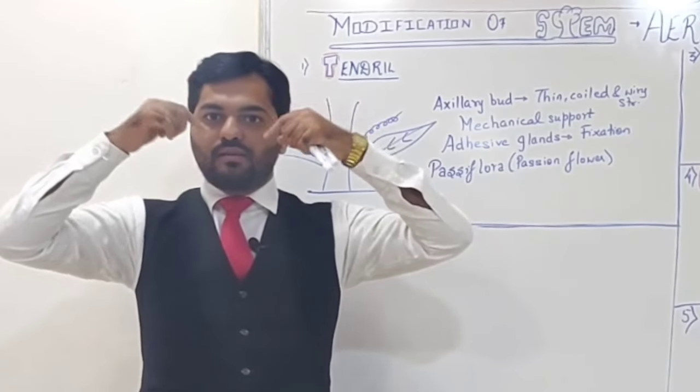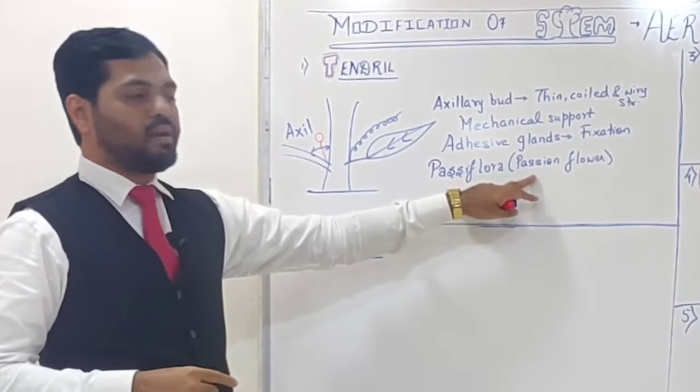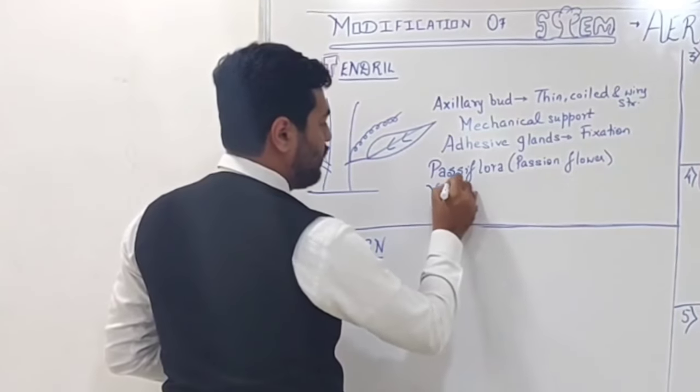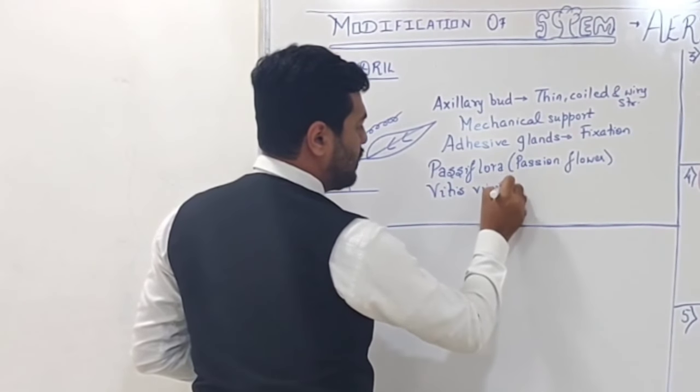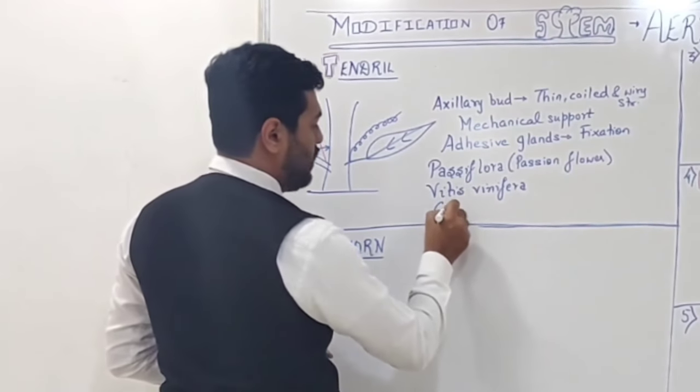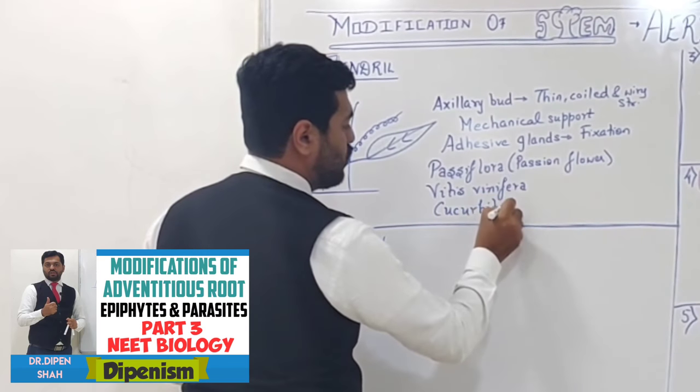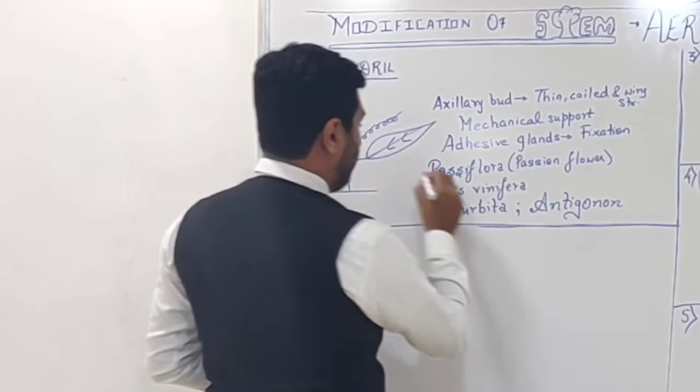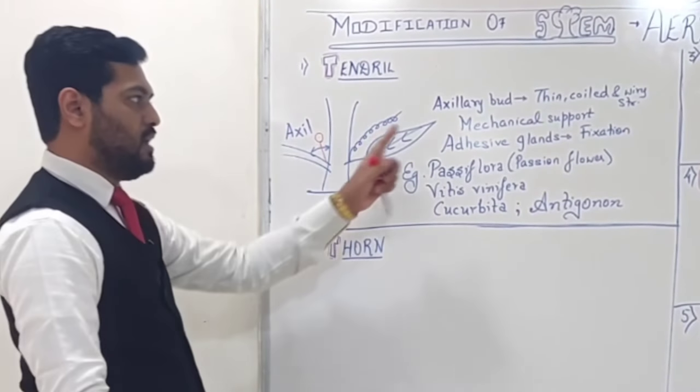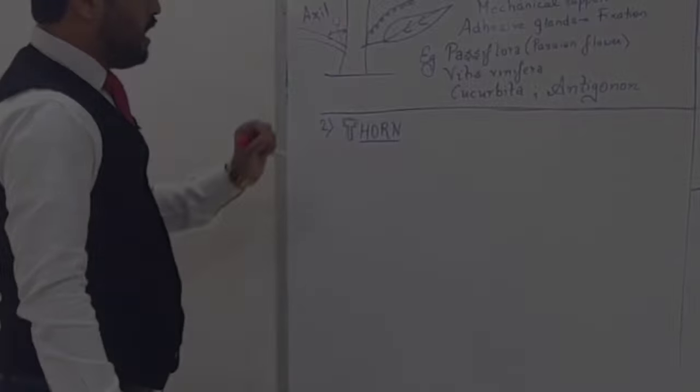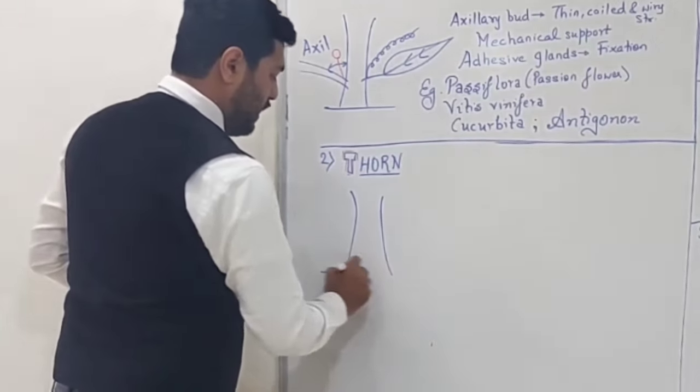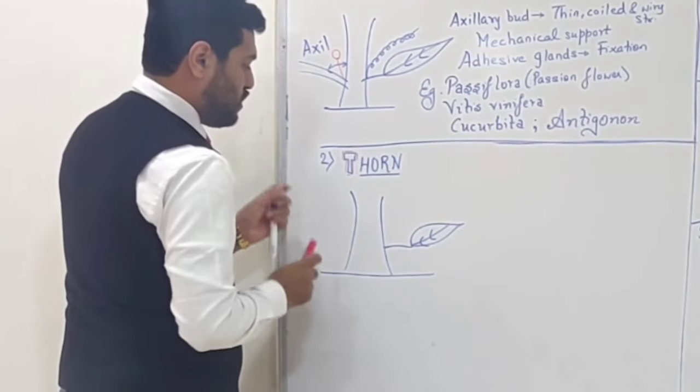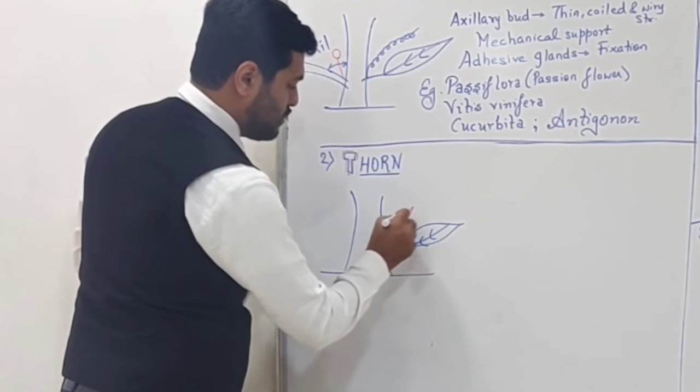The tendrilled part resembles what was placed on Jesus Christ's head - this passion flower tendril. Another example is Vitis vinifera, meaning grape vines. In grape plants, this tendril part develops.